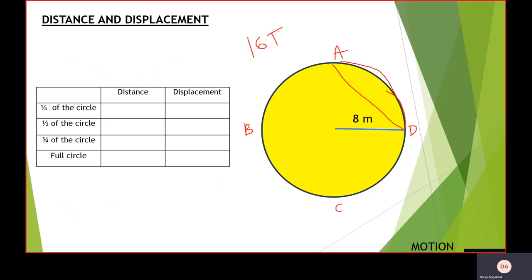For one-quarter of the circle (point A), the distance is 16π divided by 4, which gives 4π. For half (point B), dividing by 2 gives 8π. For three-quarters (point C), multiplying by 3/4 gives 12π. For the full circle (point D), the distance is 16π. Now for the displacement: at one-quarter, we find the hypotenuse of a right-angle triangle with both legs equal to the radius of 8 meters.